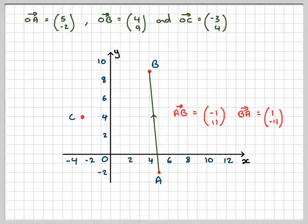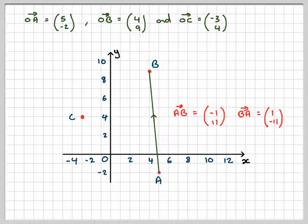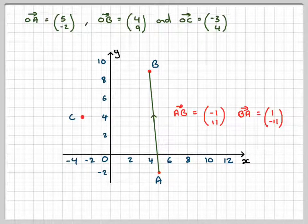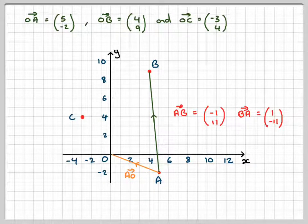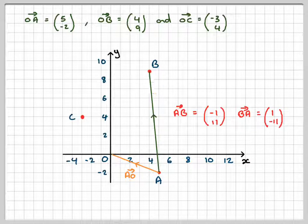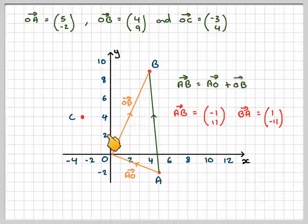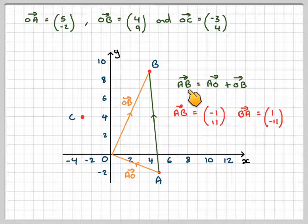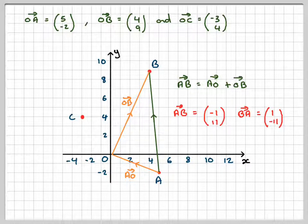And BA would be along 1 and down 11. But how did we calculate this AB? We went from A to the origin. So that's AO, and then from the origin to B. And what we did is that we added those two vectors, and then we said that's the same as AB. So this is a very, very important concept.